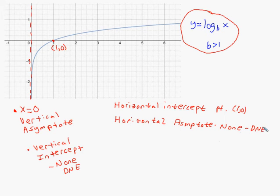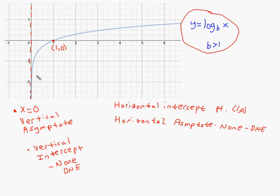These are facts that could be memorized, but the better approach is to just picture the graph. Always a vertical asymptote, never a horizontal asymptote. The horizontal intercept — where it crosses the x-axis — is (1, 0). The vertical intercept — where it would cross the y-axis — is clearly none based on the graph.